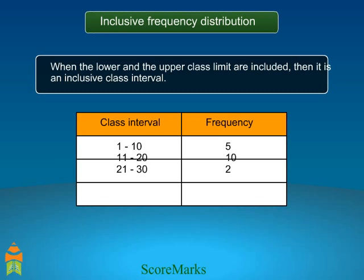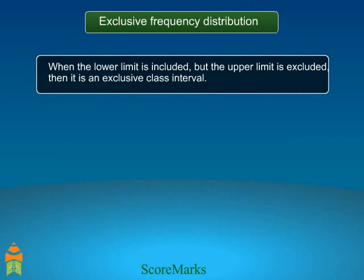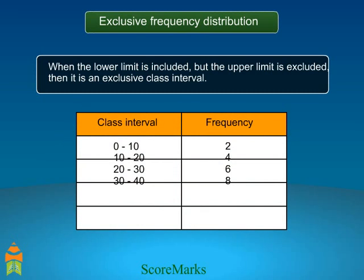This is an example of inclusive frequency distribution. Exclusive class interval: when the lower limit is included but the upper limit is excluded, then it is an exclusive class interval. This is an example of exclusive frequency distribution, where the lower limit is included but the upper limit is excluded, and the upper limit is included in the next interval.